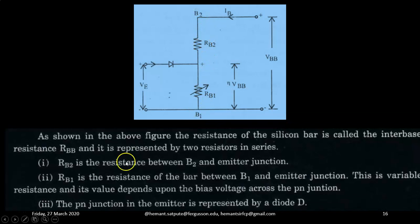Number one, RB2 is the resistance between the terminal B2 and the emitter junction. So RB2 is the resistance between the cathode of the diode, emitter diode and the base B2.